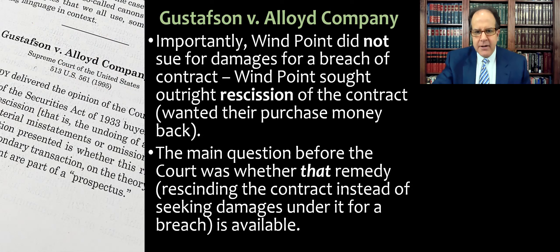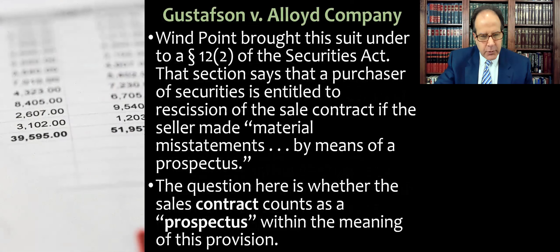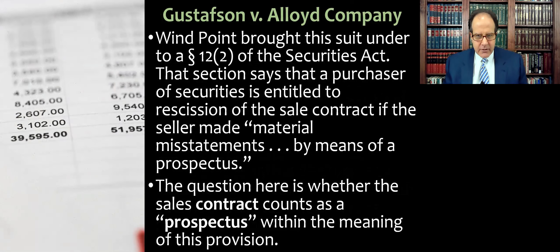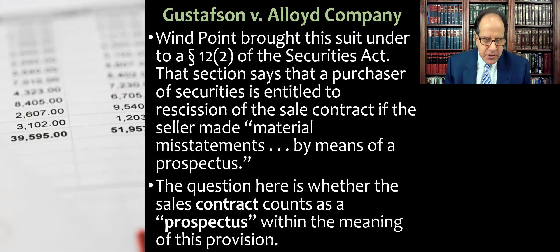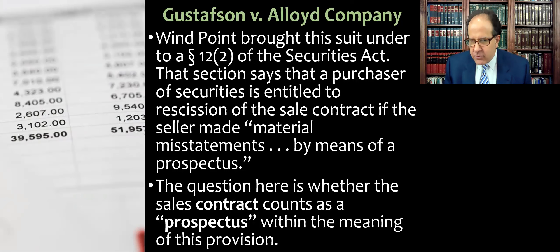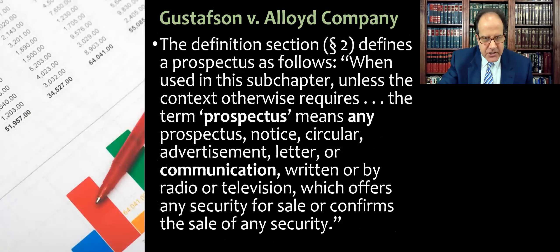The main question before the court was whether this remedy — rescission of the contract — is actually available under federal laws about buying and selling stock, which we call securities regs. What WinPoint did in order to get this remedy was bring the suit under Section 12.2 of the Securities Act. That section says a purchaser of securities is entitled to rescission if the seller has made material misstatements by means of a prospectus.